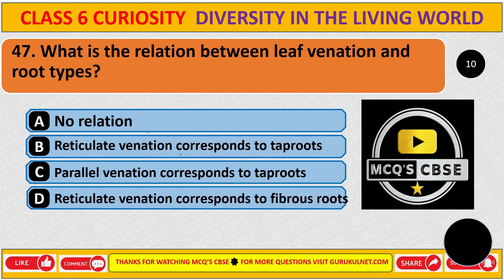What is the relation between leaf venation and root type? The correct answer is B: reticulate venation corresponds to taproot.